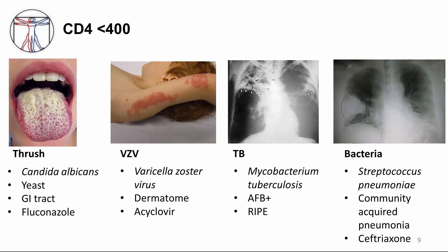Zoster is caused by varicella zoster virus, characterized by a vesicular rash in a dermatomal distribution with acute neuritis, which is painful. Diagnosis is usually clinical, and we treat with acyclovir at high doses. In many HIV patients that I've known and treated, zoster reactivation was the first indication of HIV infection.